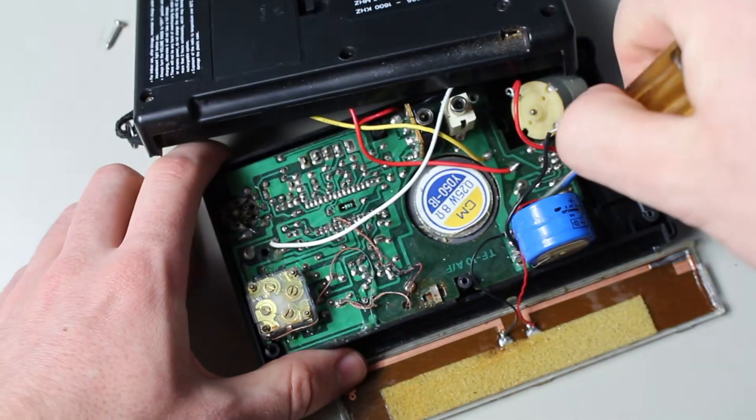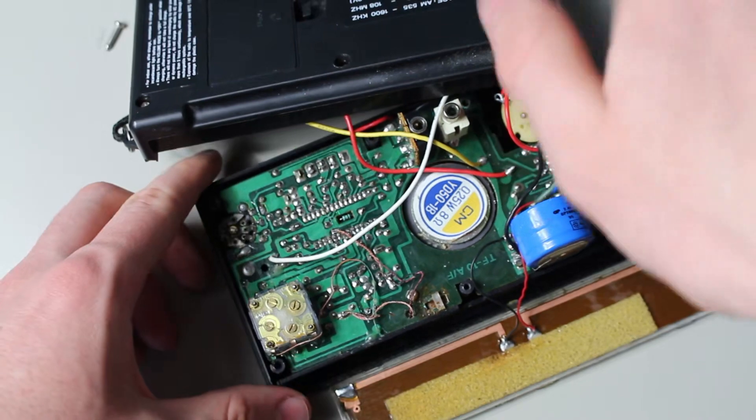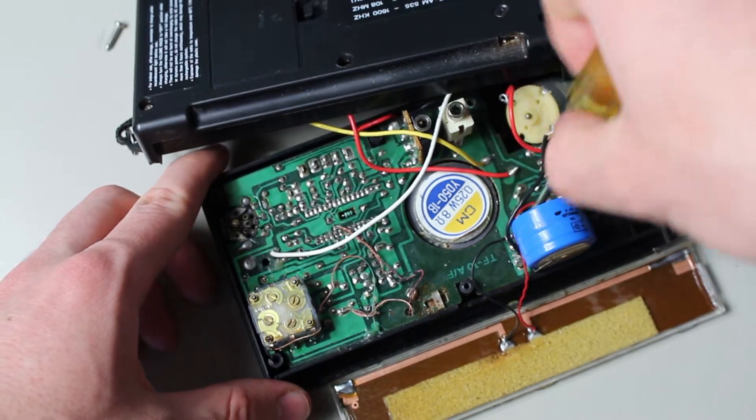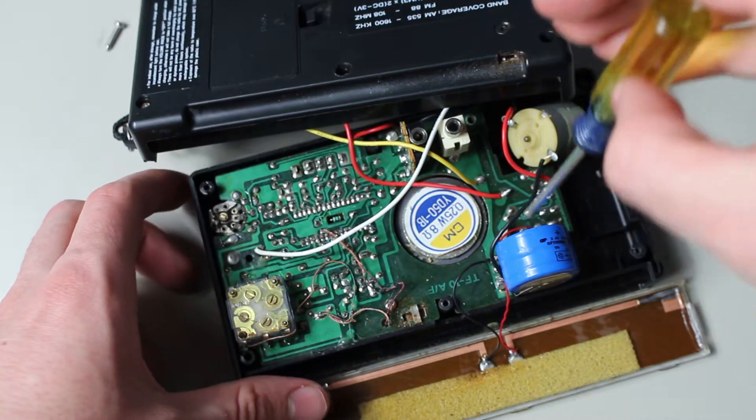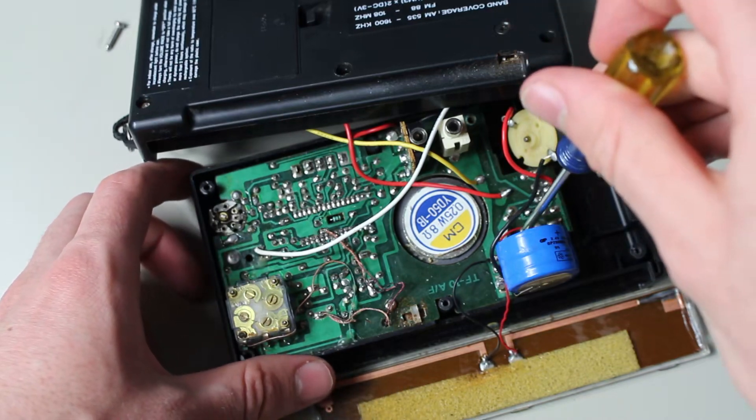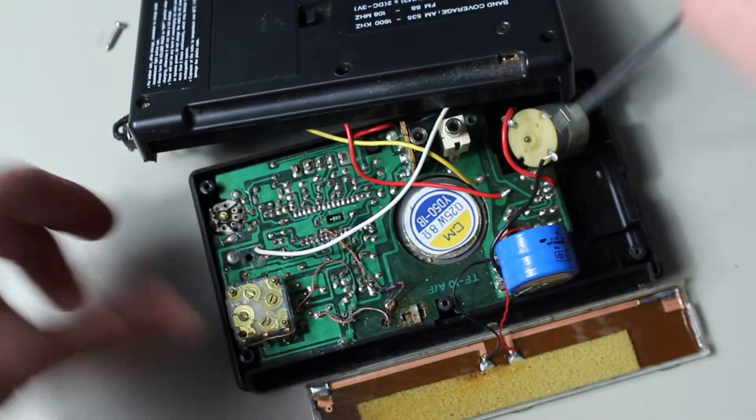I looked for screws and found a couple of them, but the board still wouldn't move. I looked around and realized that there was a screw that somehow blended in and caused me to miss it. So I removed that one too. But the board still wouldn't budge. I checked again for more screws, but didn't find any.